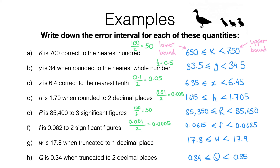This pattern fits throughout all the questions. When we round to the nearest hundred the difference between the lower and upper bound is one hundred. When we round to the nearest whole number the difference equals one. To finish off: if you are asked to find the error interval for a particular quantity, all you need to do is write an inequality showing the lower bound and upper bound.